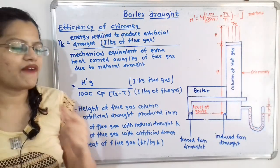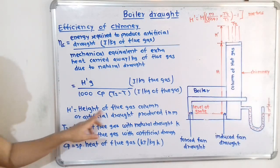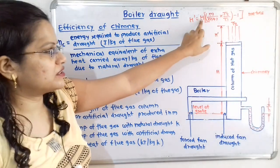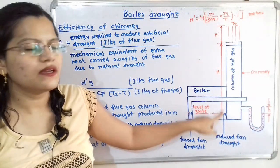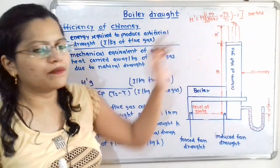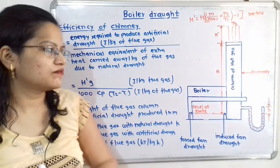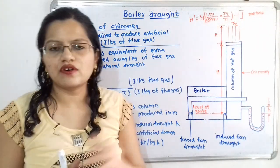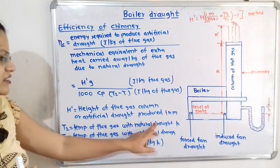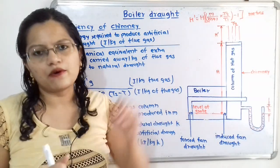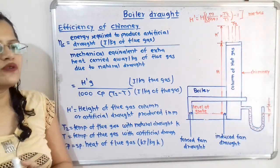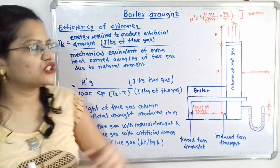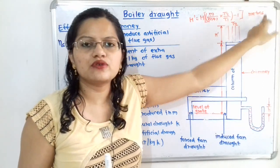If the value of h' (height of flue gas column) is not given, we use: h' = H × [m/(m+1) × (T2/T1) - 1], where H is the chimney height in meters, m is the mass of air supplied, T2 is the temperature of flue gas with natural draft in Kelvin, and T1 is the temperature of outside air in Kelvin. The result is in meters.